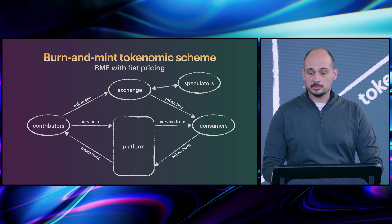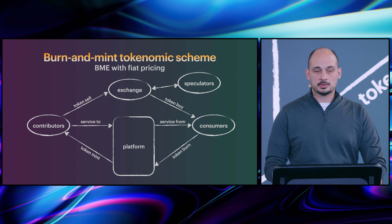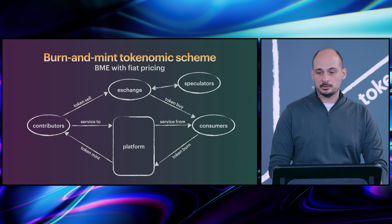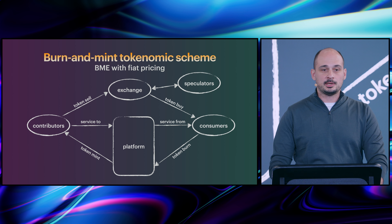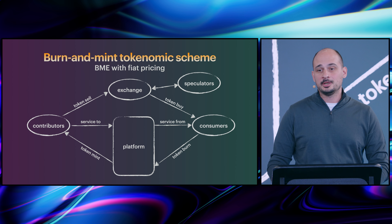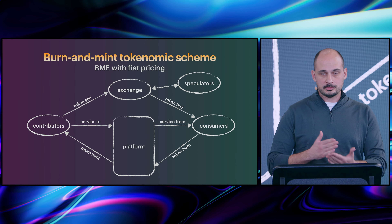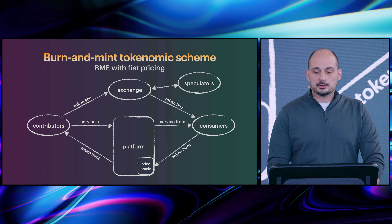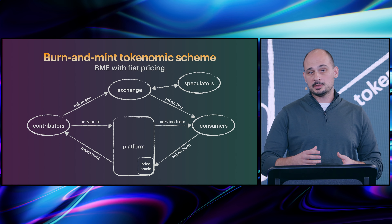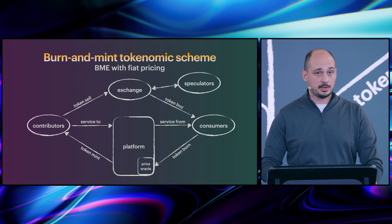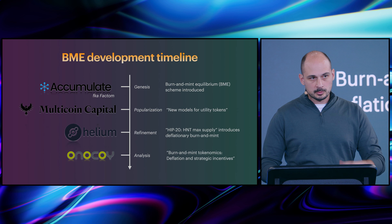To fill out the picture, on top of that schematic you also have an exchange — a place where tokens are bought and sold. There's a new category of participant called a speculator; I think of them as arbitrageurs trying to find the true price of the token. Consumers and contributors can also be speculators, but that's a separate component of their identity. The key element is that price oracle, which determines the price of the service as the inverse of the token price on the exchange.